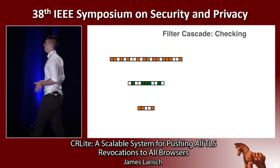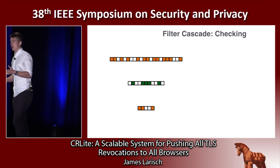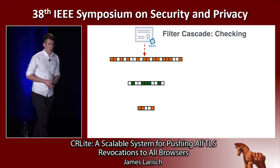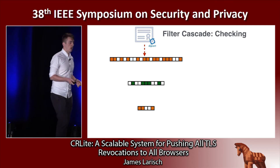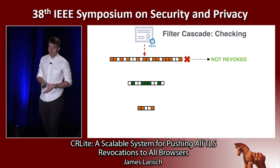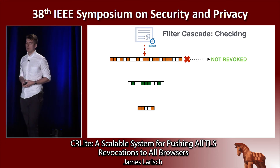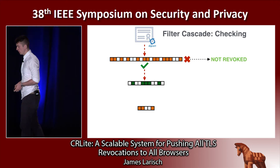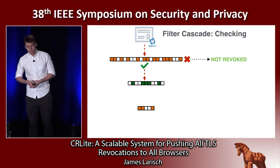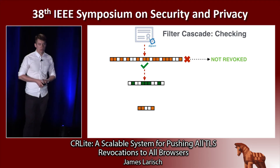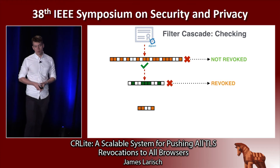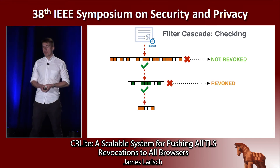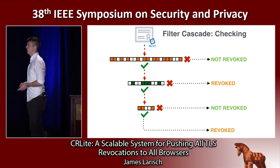We ship this bloom filter cascade to clients. When they encounter a certificate, they check the first bloom filter. Since bloom filters have no false negatives, if the certificate is not in the first bloom filter, it is not revoked. If it is in the first bloom filter, we check the second. If it's not in the second, it was in the revoked bloom filter but not in the whitelist — so it is revoked. If it is in the second filter, we check the third, and this process continues until the last level.